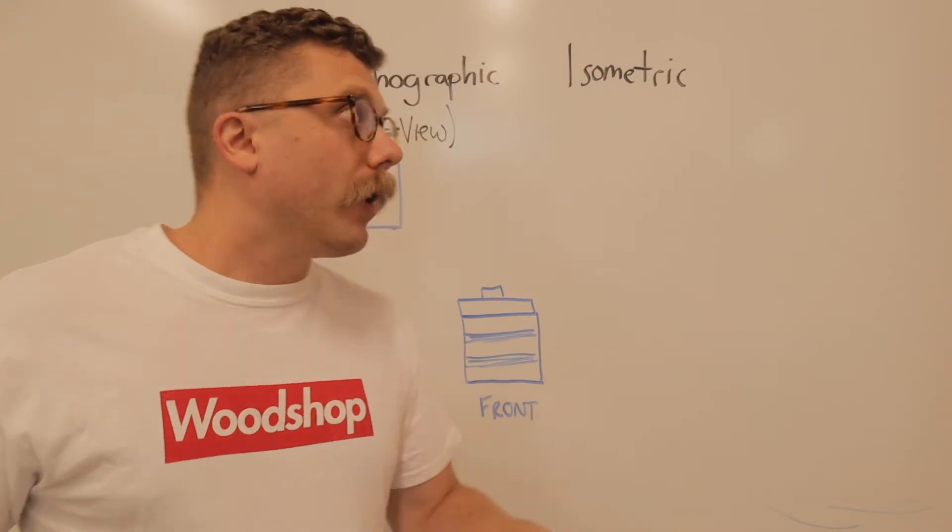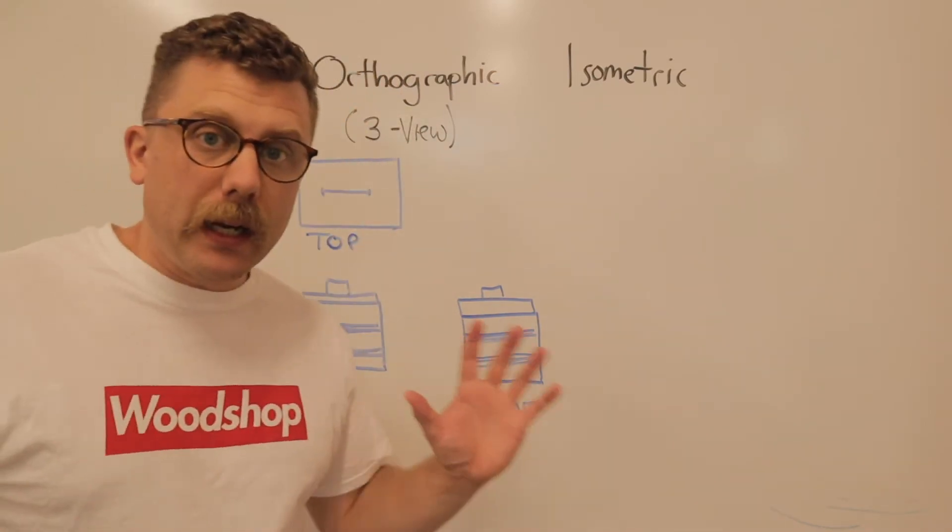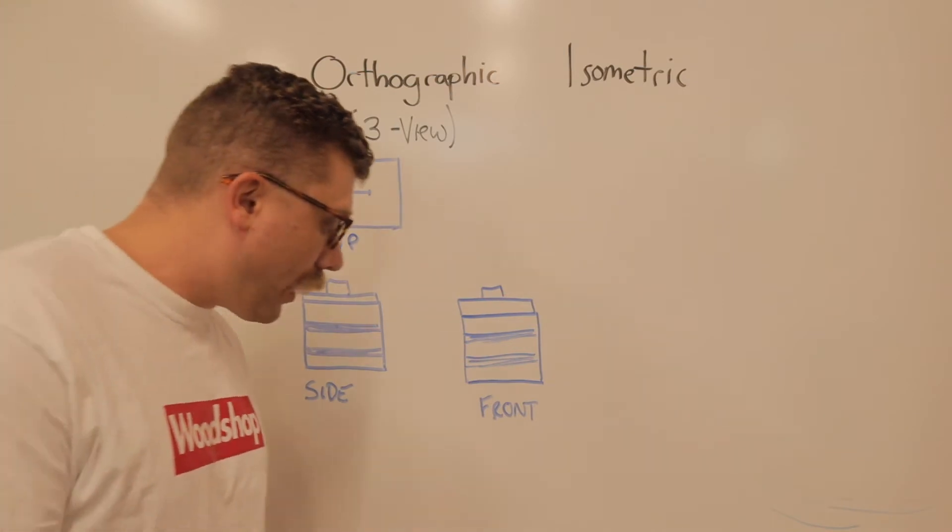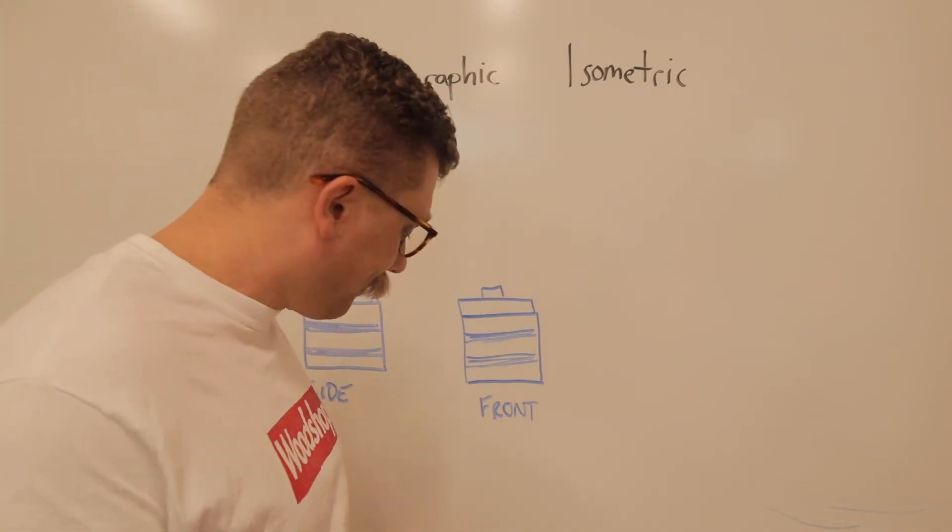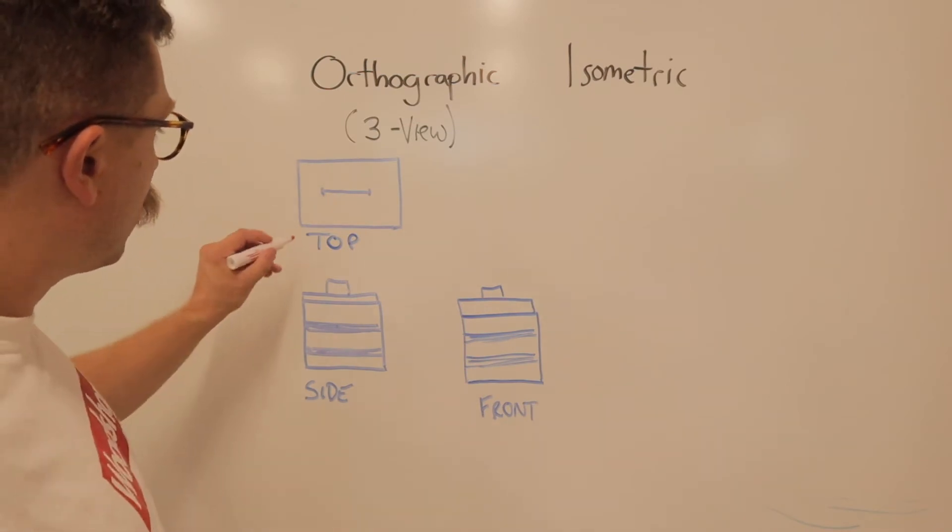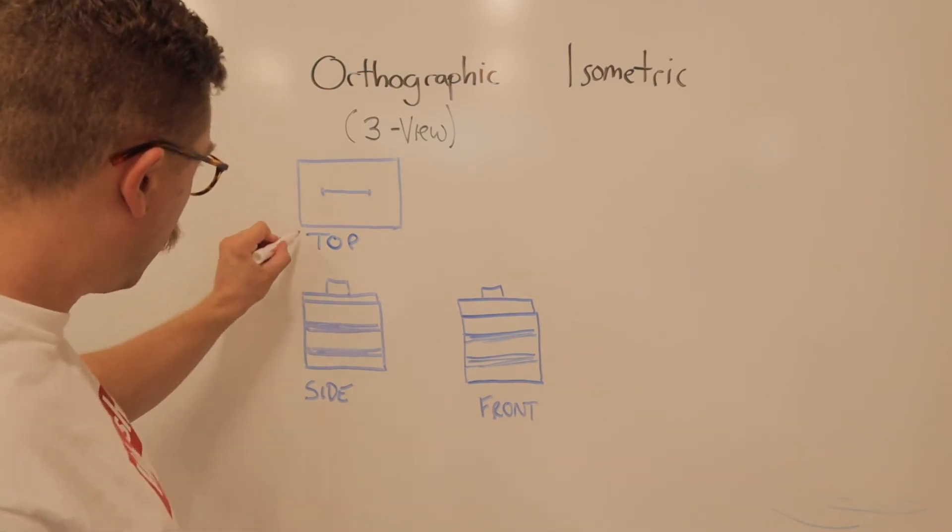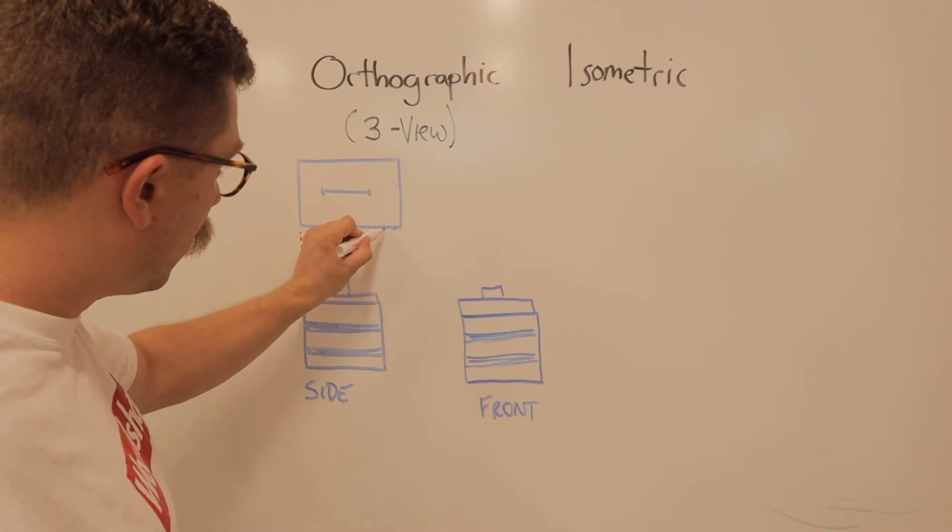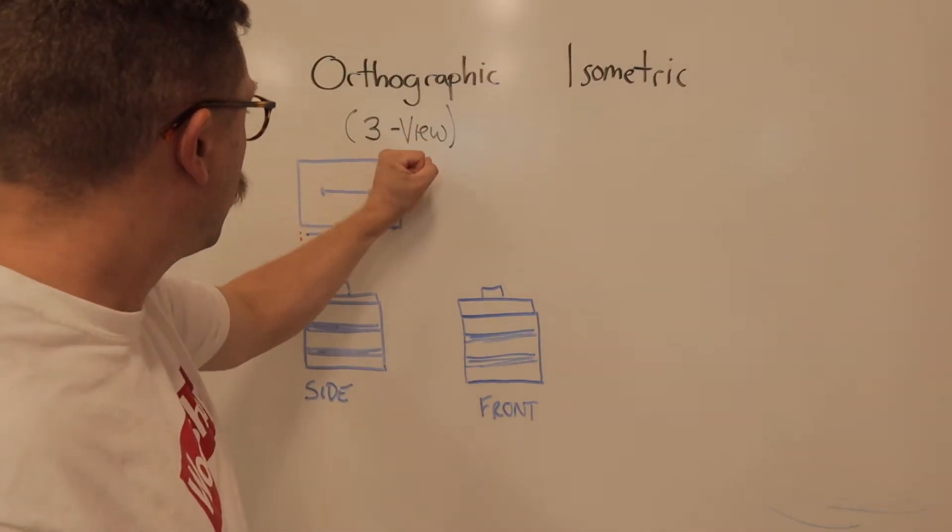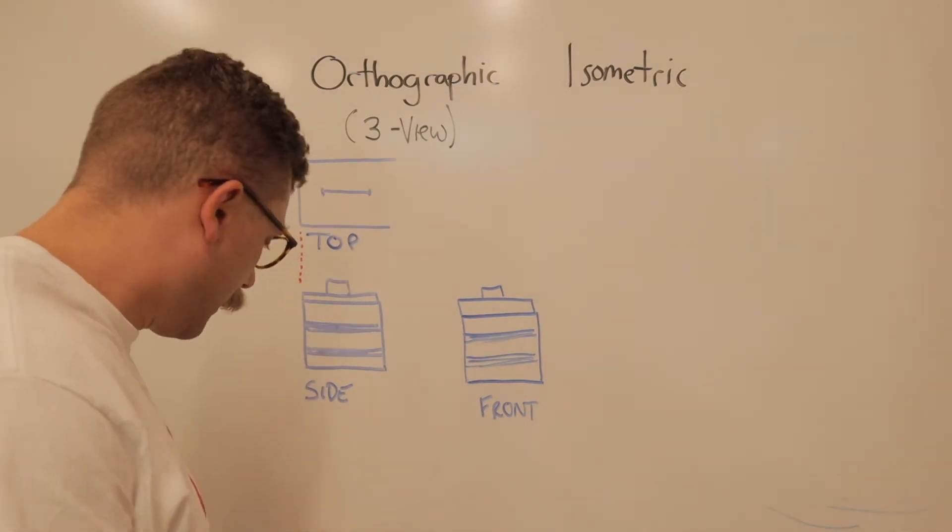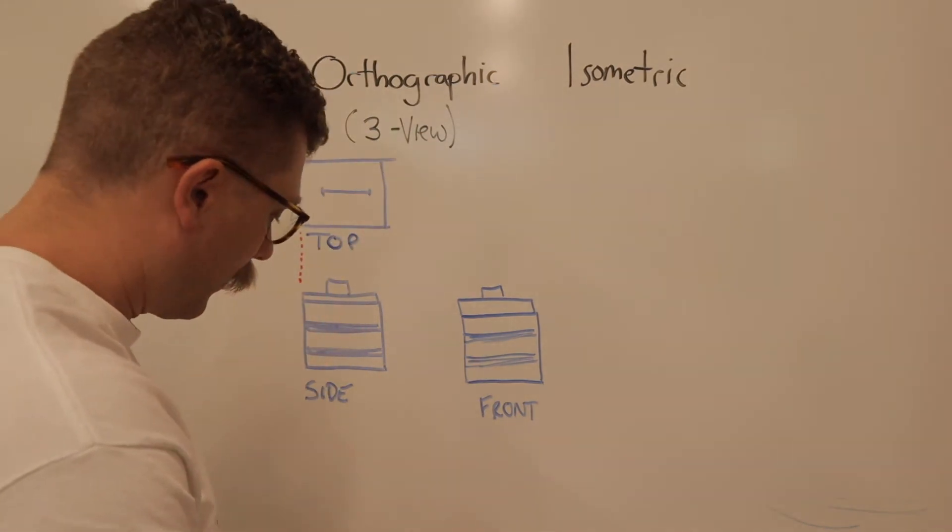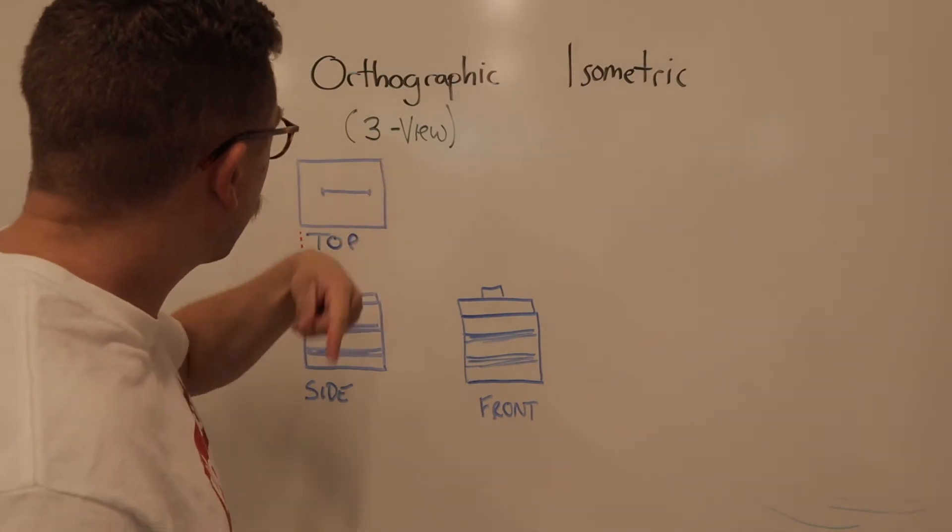So, in a three view drawing or an orthographic drawing, we need a top, a side, and a front. The way they're drawn on the paper is just like this in this L shape. So, we'll notice that these, well, I didn't draw that very good. It's not a square. Let's get rid of that end. There we go. That's a little better.